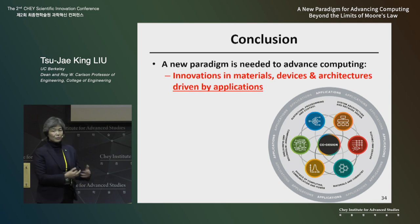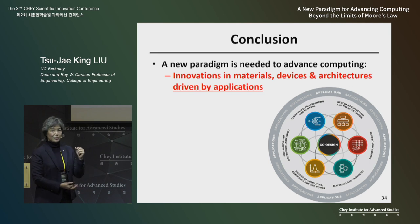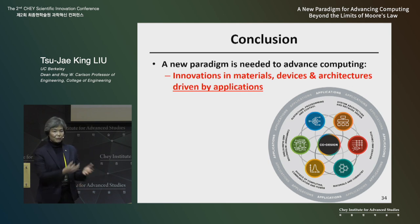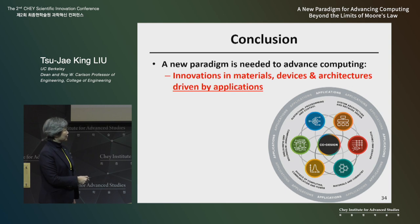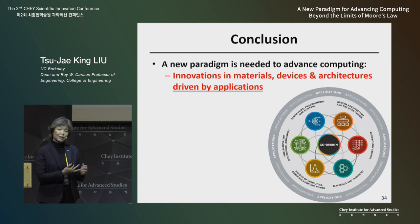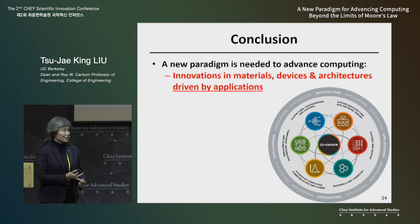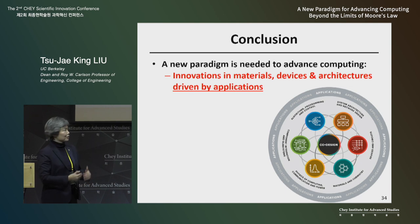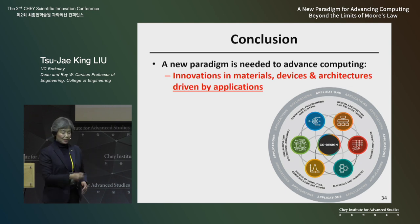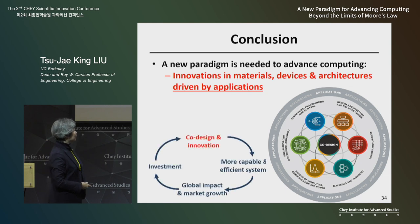Today we're moving more and more towards specialized processors — like tensor processor units and graphical processor units for AI and graphics. In the future, the materials, the transistors or switches, the circuits, and the architecture will all have to be co-optimized for specific applications. That's the new paradigm.